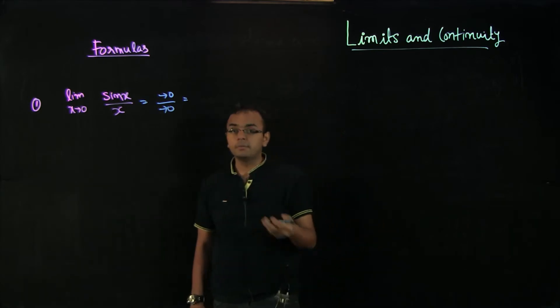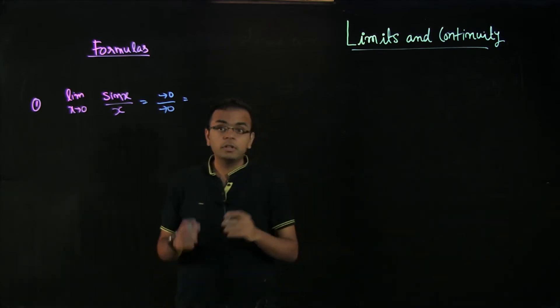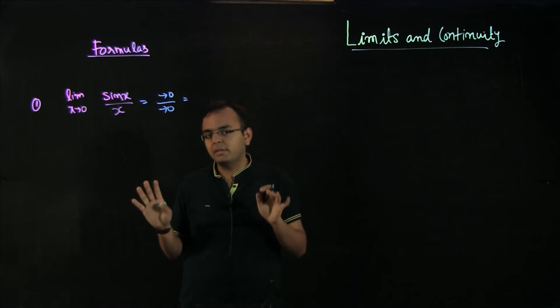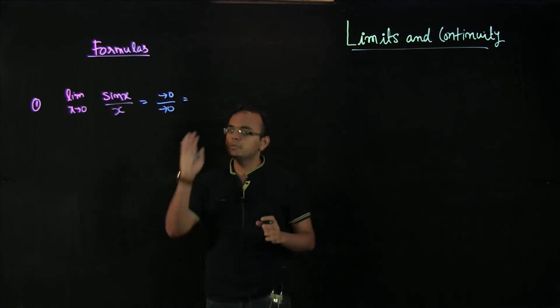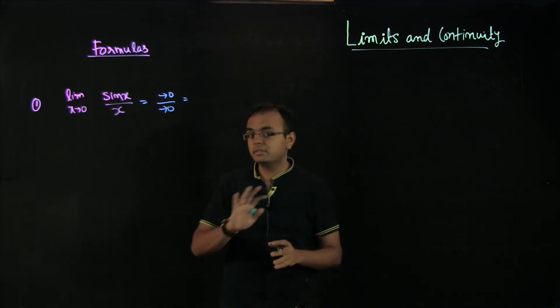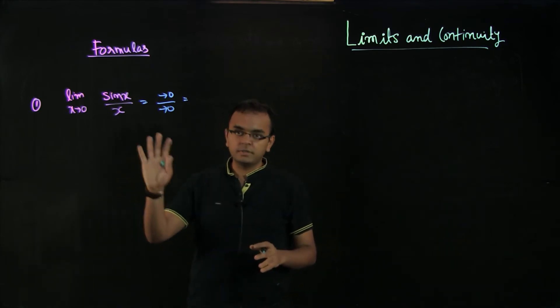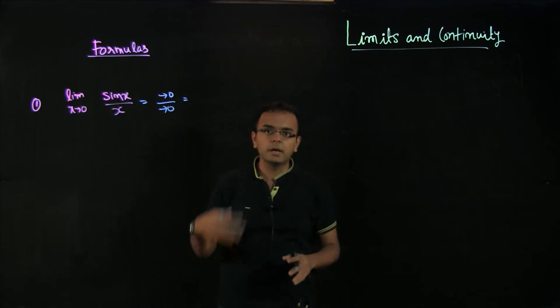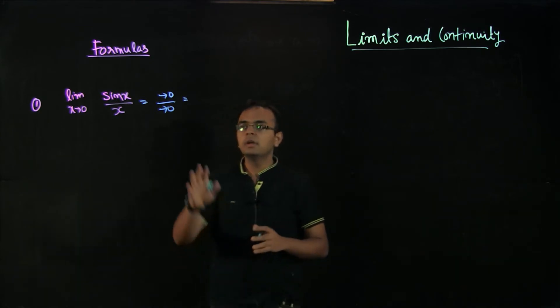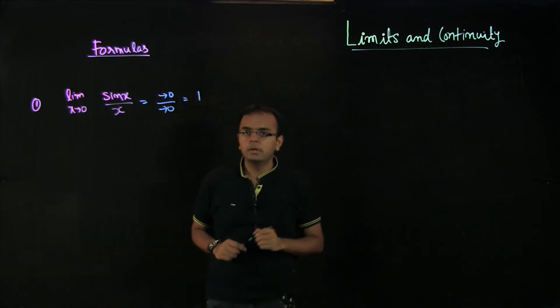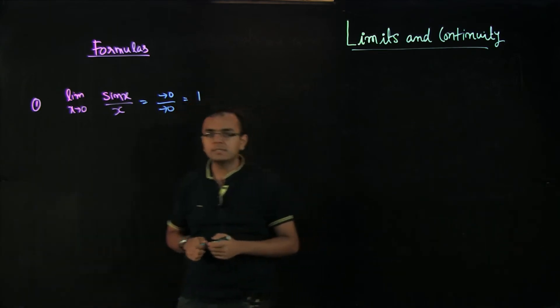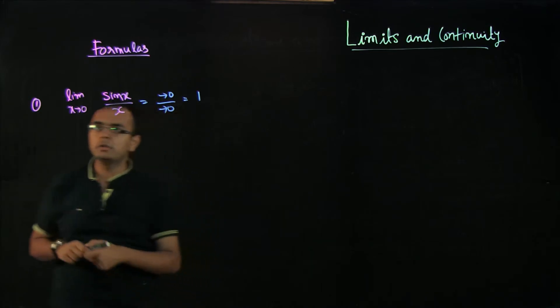There is a certain value that it approaches to, and we will not derive the expression here. We might touch upon derivation in one of the later videos, but that is not really very important. Important thing is you should know what the value is because this is a very widely used formula. Approaching 0 by approaching 0 for sin x by x is actually equal to 1, and you should just remember this as something that you will use all the time.